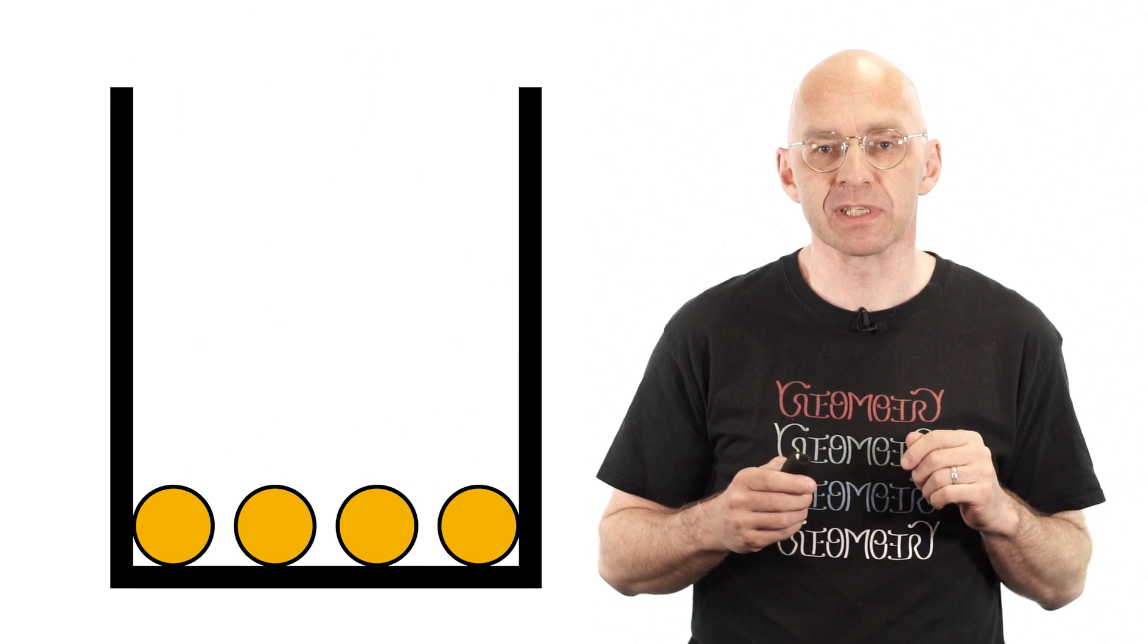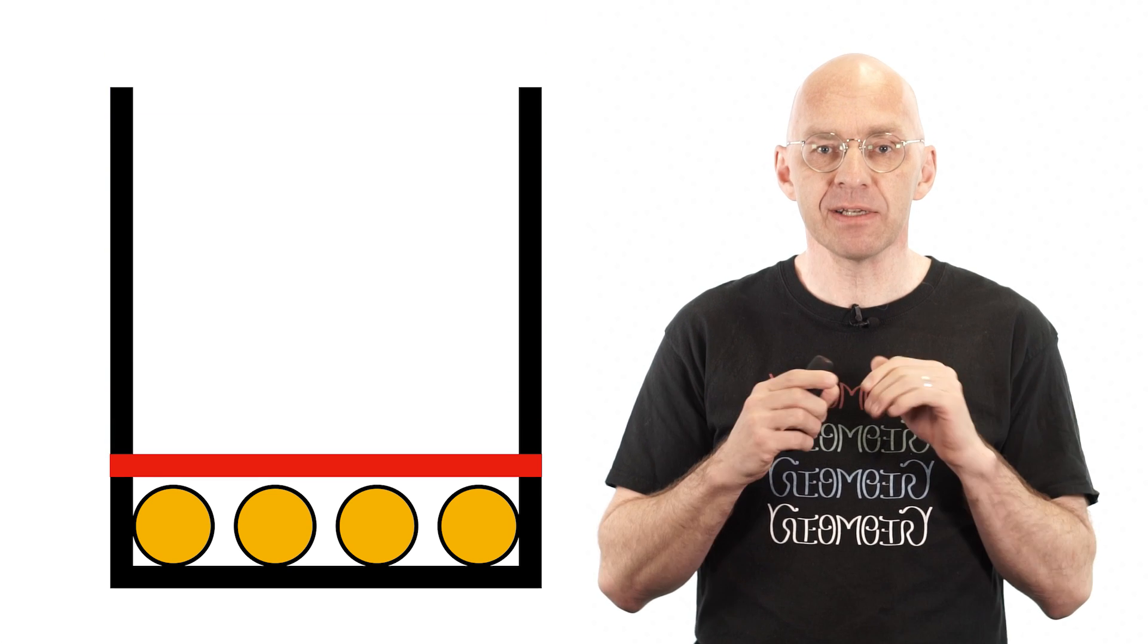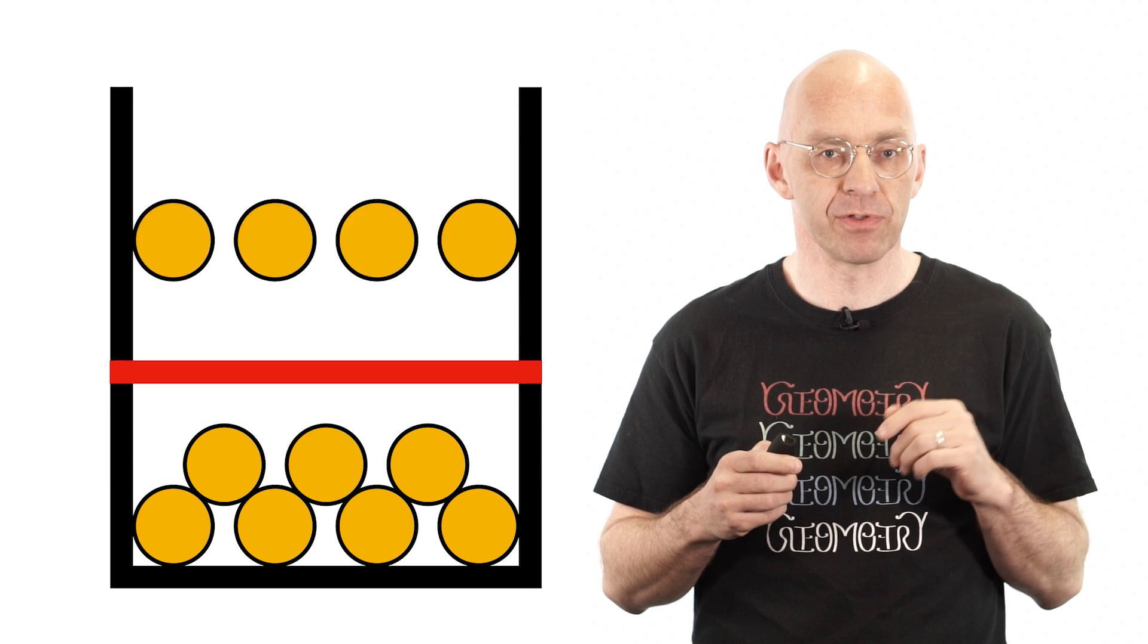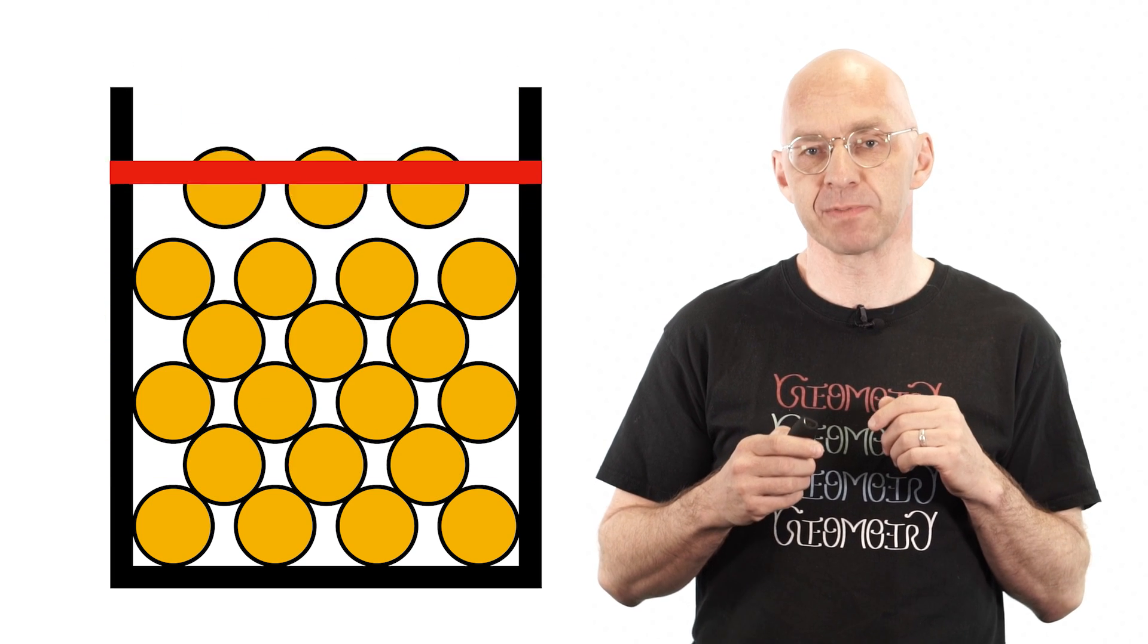Because the first row of circles is perfectly level and the circles are equally spaced, the same is true for the second row, and for the third, and for all subsequent rows, right?